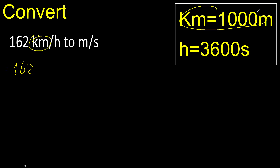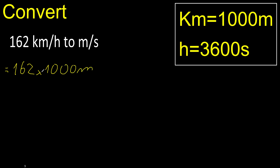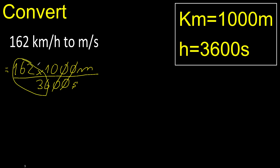162, here, multiplication. The hour is here, second. The last digit is 0, therefore eliminate. Can be simplified because it can be divided by the same number.